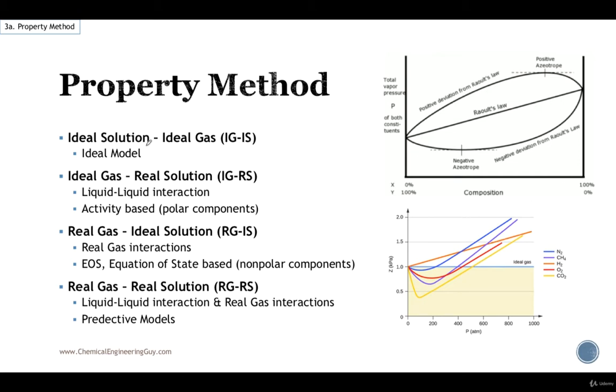Ideal gas and solution can be treated with ideal models. Raoult's law is good for ideal solutions. The ideal gas law models perfectly well low pressures, high temperature models. So this is a good example of a IGIS system. Ideal gas and real solution, you will have a liquid-liquid interaction. So this one is very important. Therefore we must use activity. Remember what's the activity coefficient and how they interact between each other? This is mostly for polar components.